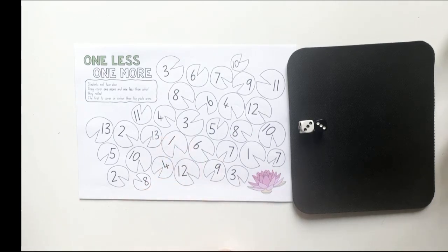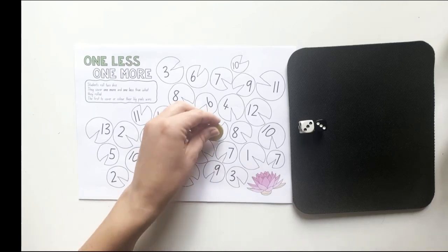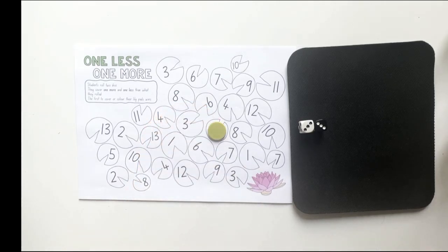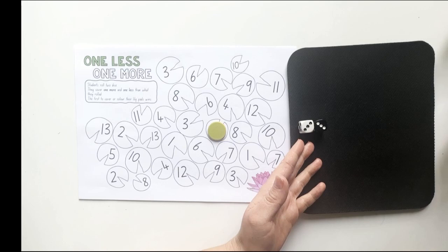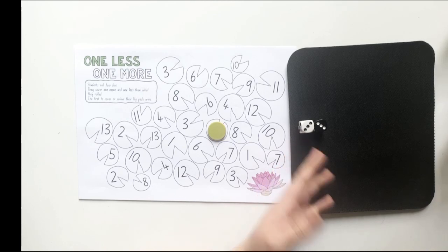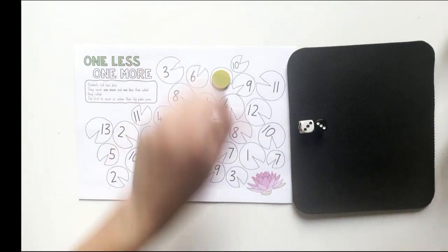So if I'm at number six, what is one less? One less than six is five. So I'm going to cover up a number five. What's one more than six? Seven. So I get to cover up a number seven as well.